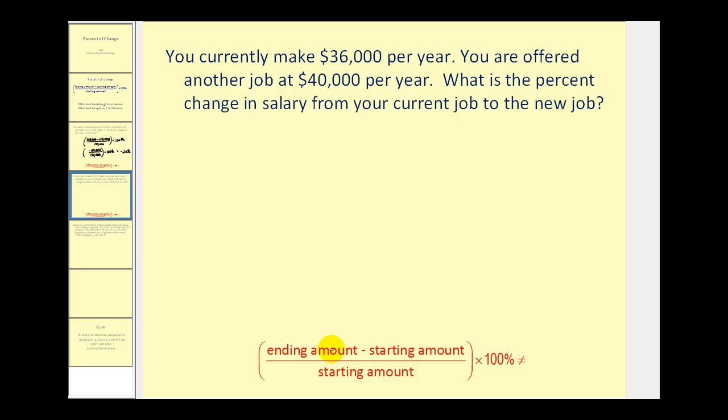In this case, the ending amount is the new salary of $40,000 minus the starting amount, which is your current salary of $36,000, divided by the starting amount, which is the lower salary of $36,000.